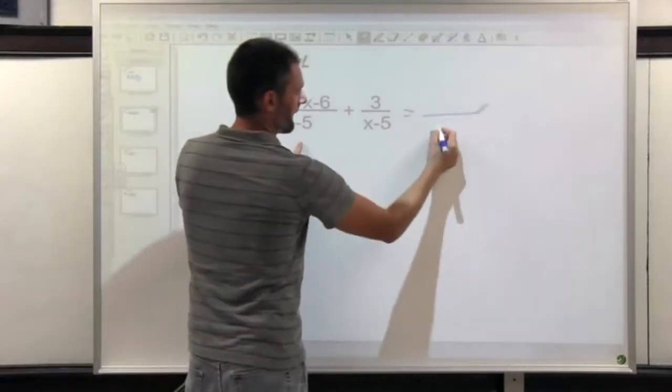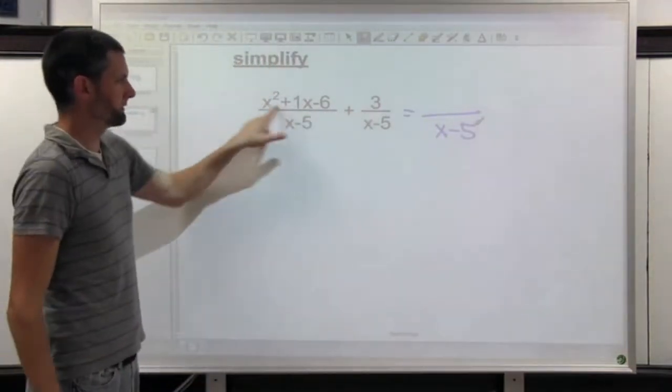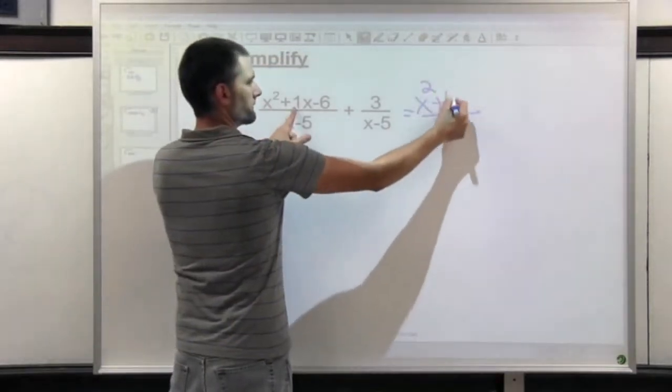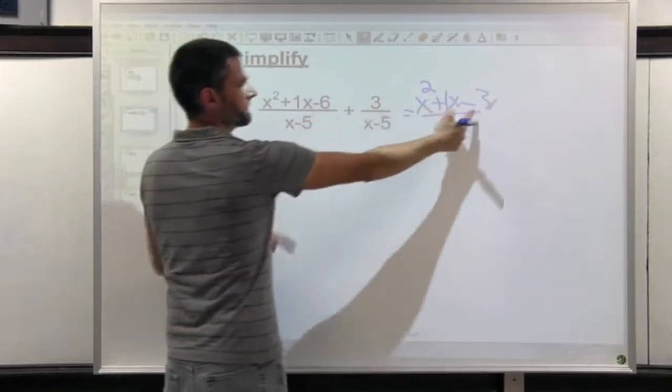That means we're going to add them up and x minus 5 will be the denominator. Add up to the tops by looking for like terms. So that'll be x squared plus 1x minus 3. These two terms combine to make negative 3.